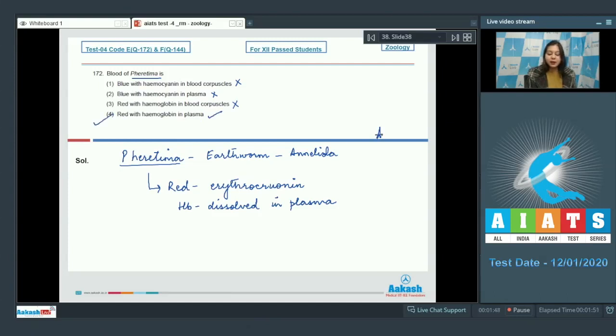The blood of Pheretima is red due to the presence of erythrocruorin. And hemoglobin is found dissolved in the plasma. So the correct answer becomes option number 4. Proceeding to the next question.